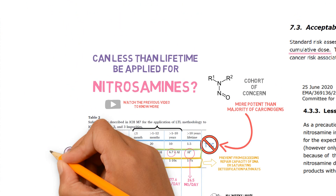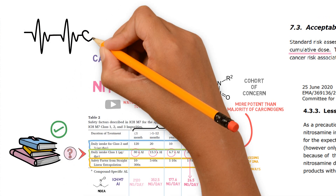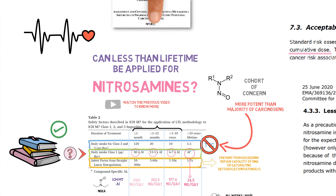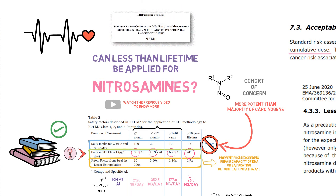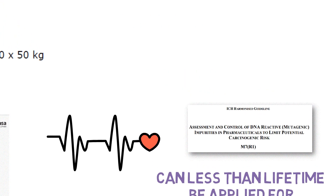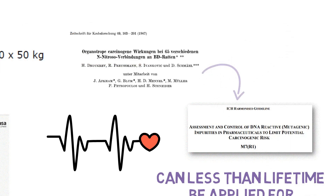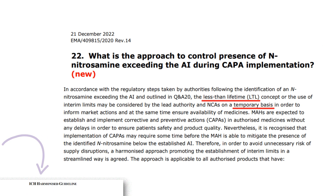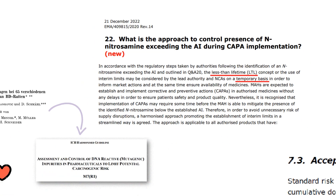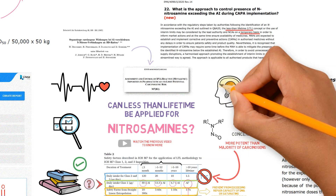This study shows that the less than lifetime approach ensures a negligible risk of cancer and is protective of patient health when establishing limits for mutagenic impurities, including nitrosamines, if using ICH M7 principles. In fact, these studies performed with NDEA were one of the bases for the less than lifetime concept being included in ICH M7 in the first place. Nonetheless, the wider regulatory acceptance of this approach is still taking shape, so even more investigations are underway in this area to allow the science to advance even further.